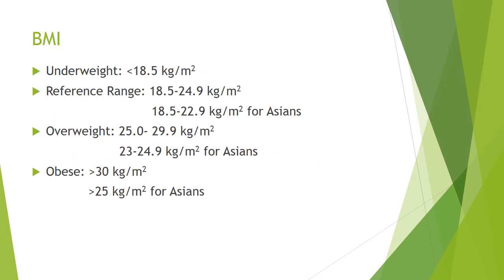The BMI ranges are: underweight is less than 18.5 kg/m². The reference range is 18.5 to 24.9 kg/m² for other ethnicities, and 18.5 to 22.9 kg/m² for Asians including Indians. Overweight is 25 to 29.9 kg/m² for other ethnicities, whereas it is 23 to 24.9 kg/m² for Asians. Obese is more than 30 kg/m² for other ethnicities, and more than 25 kg/m² for Asians. This is because in Asians, body fat accumulates in the abdomen — intra-abdominal visceral fat accumulation is more pronounced in Asians. This fat is highly metabolically active and responsible for numerous complications of obesity. For Asians, the BMI limit has therefore been set rather low.